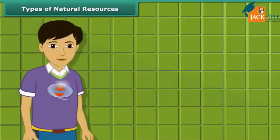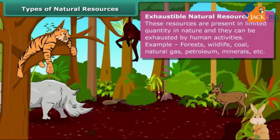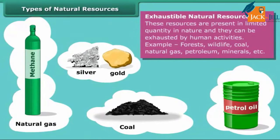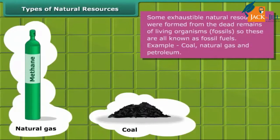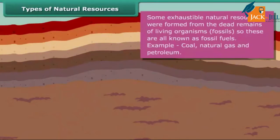On the other side, the amount of exhaustible resources is limited and they can be exhausted by human activities and consumption. Forests, wildlife, coal, natural gas, petroleum, and minerals are examples of these resources. Some exhaustible resources like coal, natural gas and petroleum were formed from the dead remains of living organisms called fossils, and hence these are also known as fossil fuels.